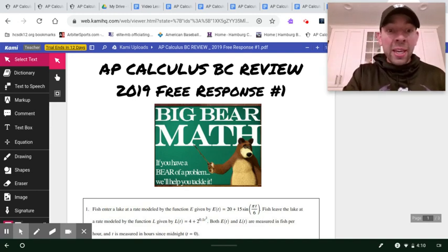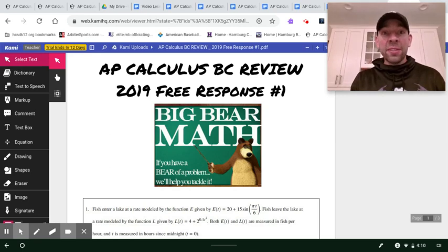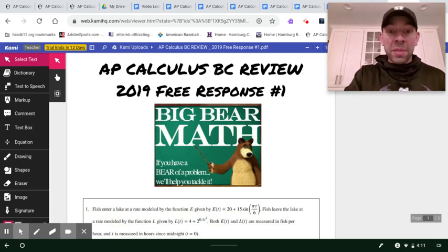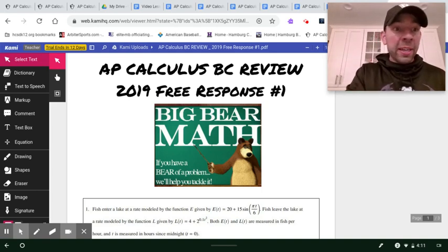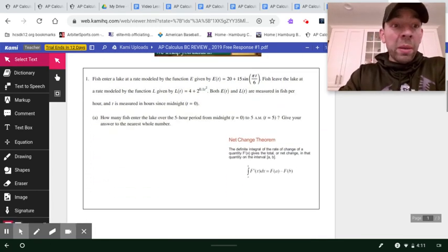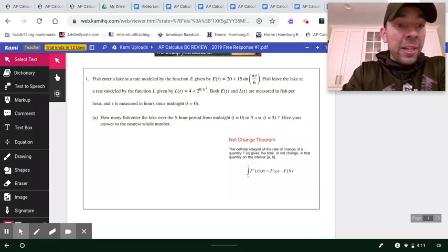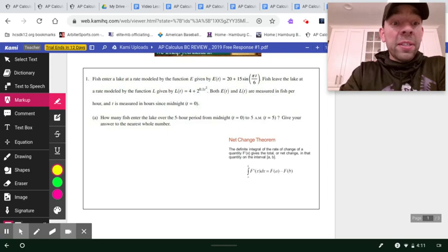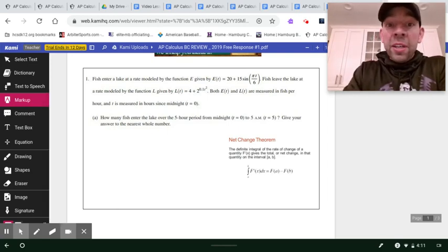The theme here today is a simultaneous rates style question. The rate at which one quantity enters while another quantity or that same quantity is exiting at the same time. And so today it just happens to be fish entering a lake and leaving the lake. So using your technology, I'm using a TI-84 Plus, and I'm guessing you're using something fairly similar.